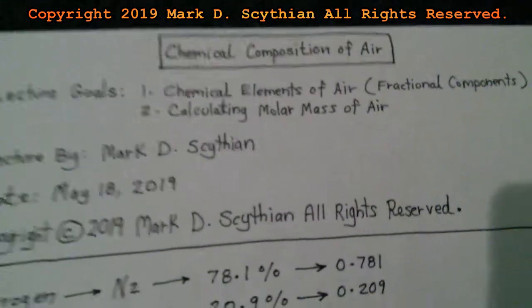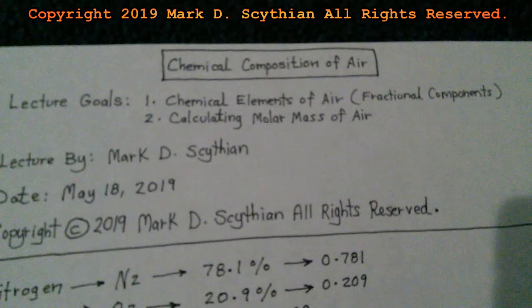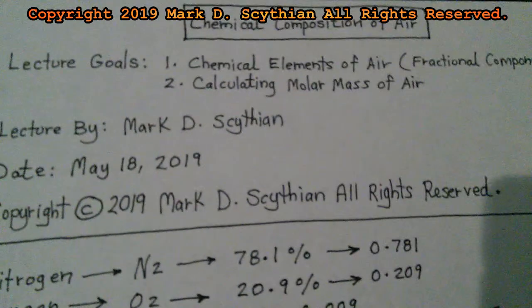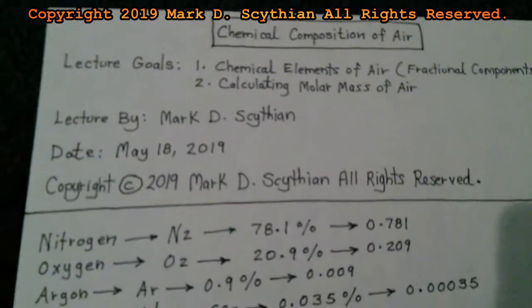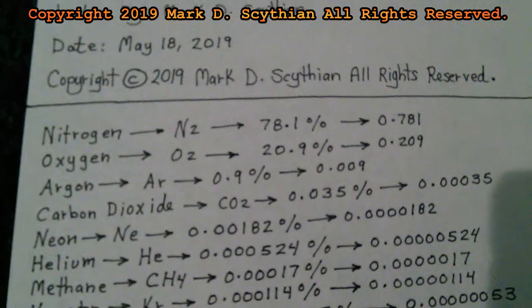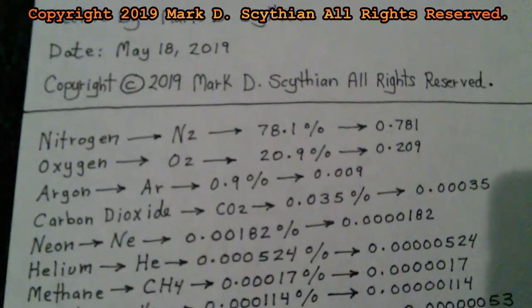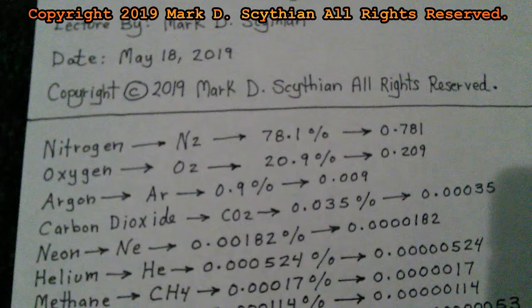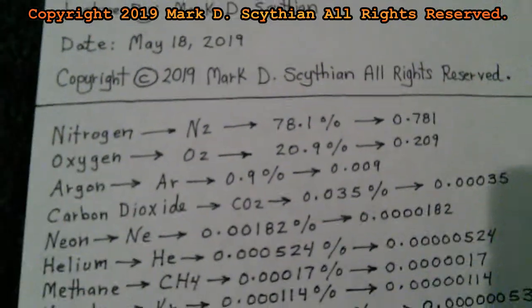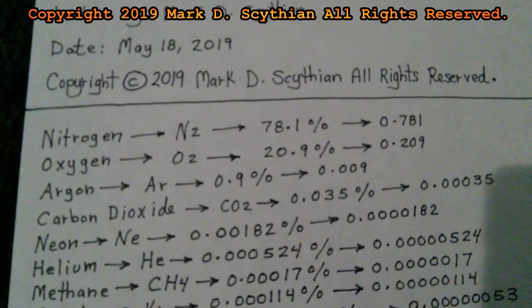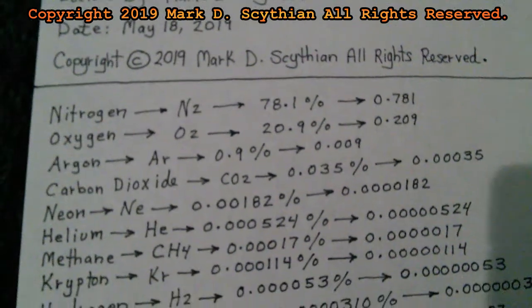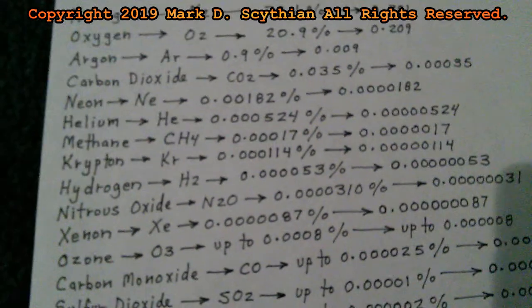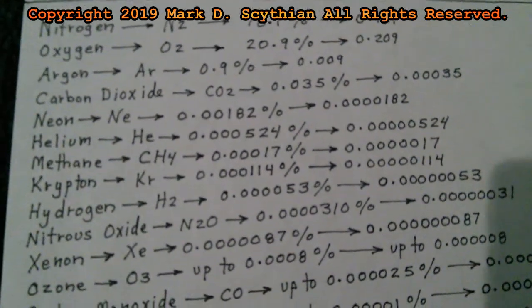This lecture will focus on the chemical elements of air as fractional components, as well as calculating the molar mass of air. It's understood that air is mostly nitrogen and oxygen — nitrogen gas, N2, by a compositional percentage of around 78%, and oxygen approximately 21%, but there are also trace elements of other gases and elements within air designated as 1% inert gases.